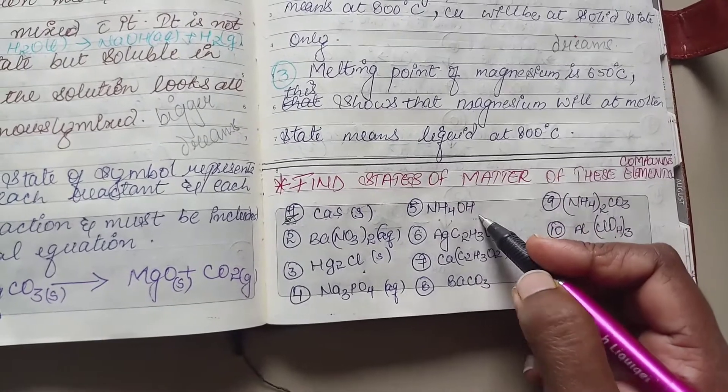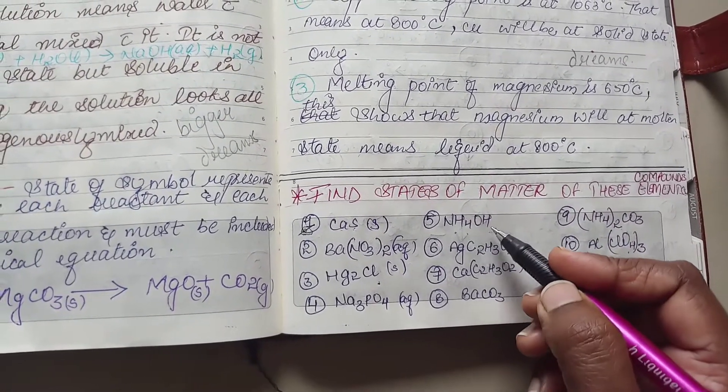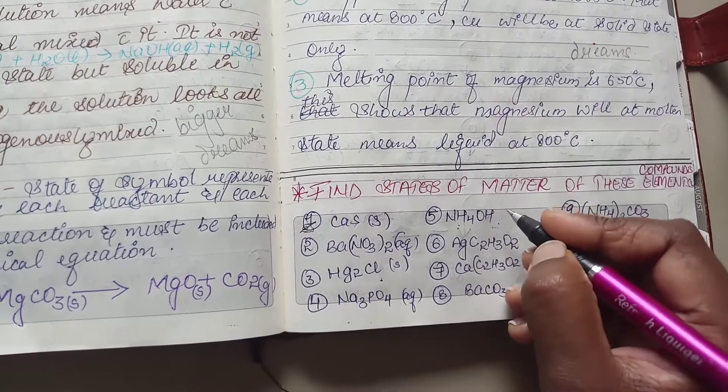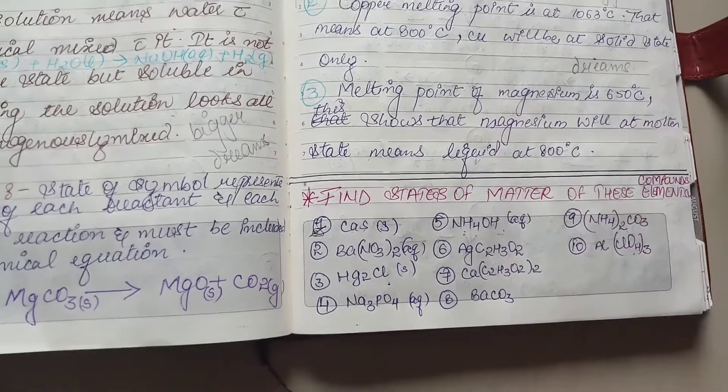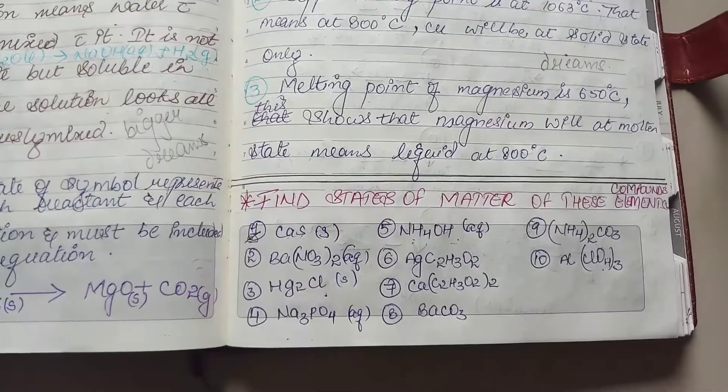Now, we have NH4. So, hydroxide is, though it is insoluble, with NH4 it becomes soluble. Hence, the state of matter of this compound is going to be aqueous.